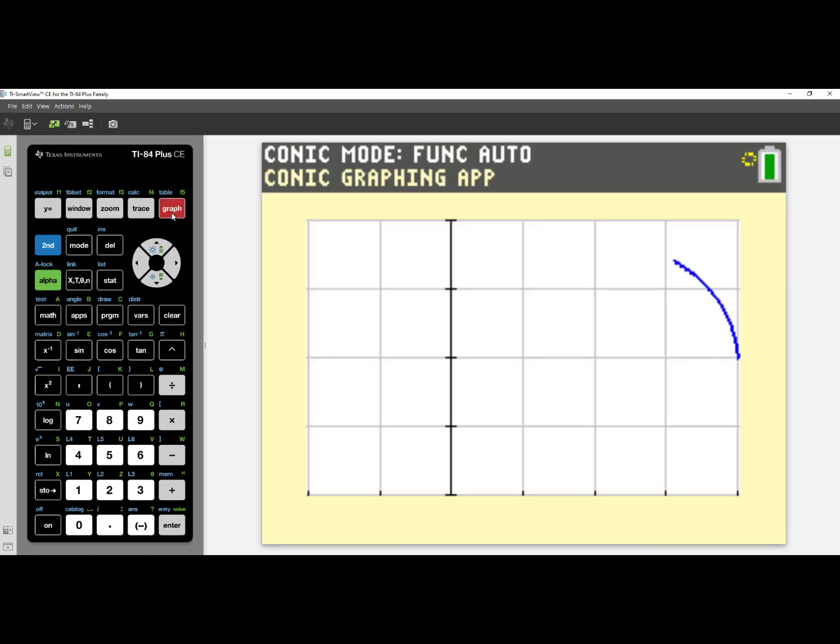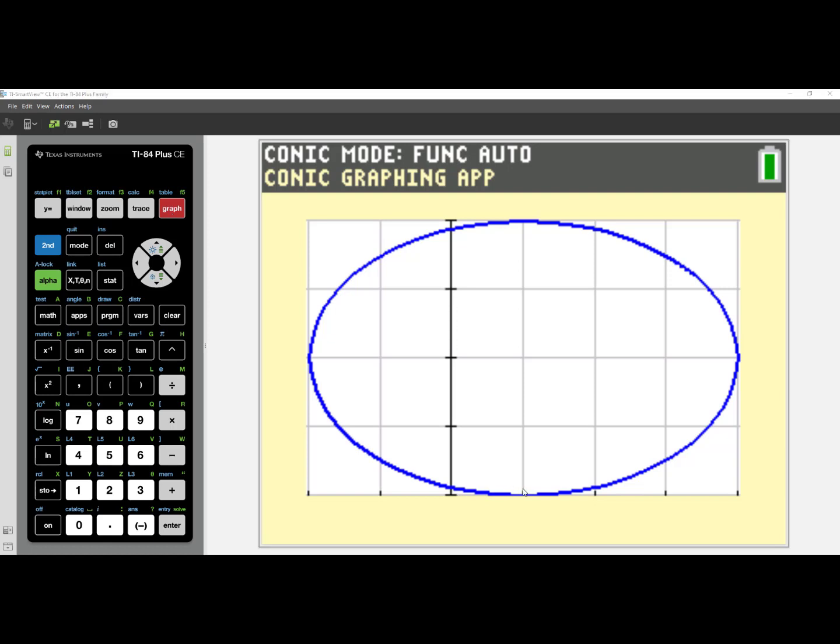When I hit Graph, I now see the image of my ellipse. The center is at 1, 3, and it is stretched 3 units from the center point in the x direction, and 2 units from the center in the y direction.